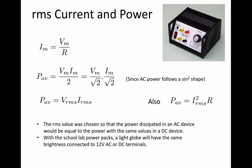So you can see that the RMS value was chosen so that the power dissipated in any AC device would be equal to the power dissipated with the same voltage and current in a DC device.